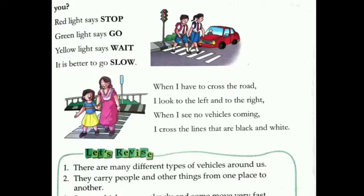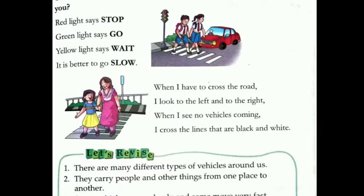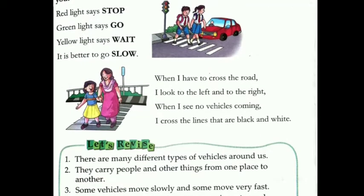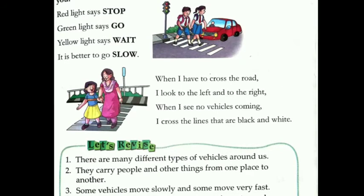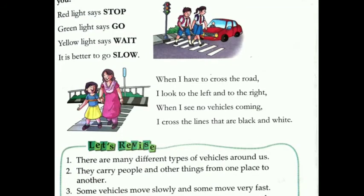You must have seen the traffic lights on the road — yani ke jo traffic lights aapko dikhai deti hain road pe, woh aap se kya kehti hain? Red means stop — red light kehti hai stop. Green light says go. Yellow light says wait.